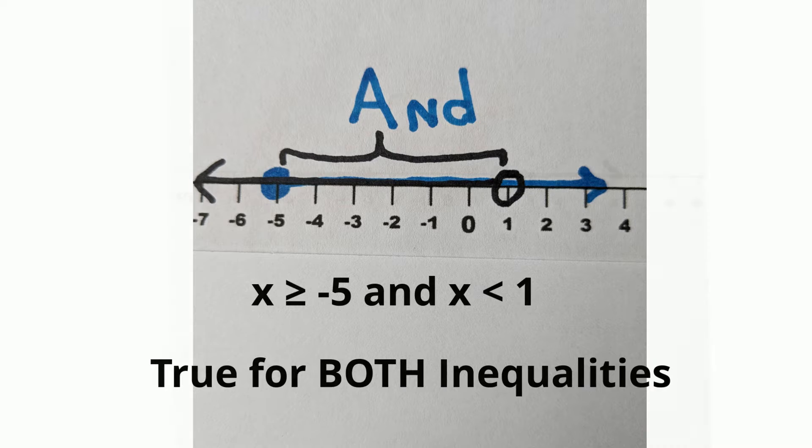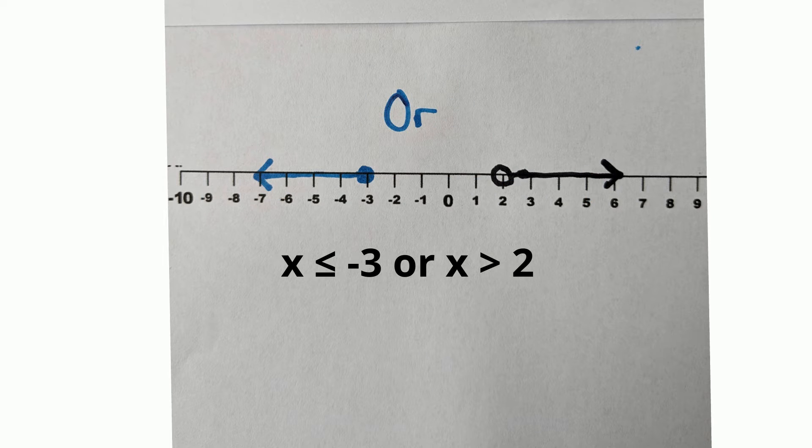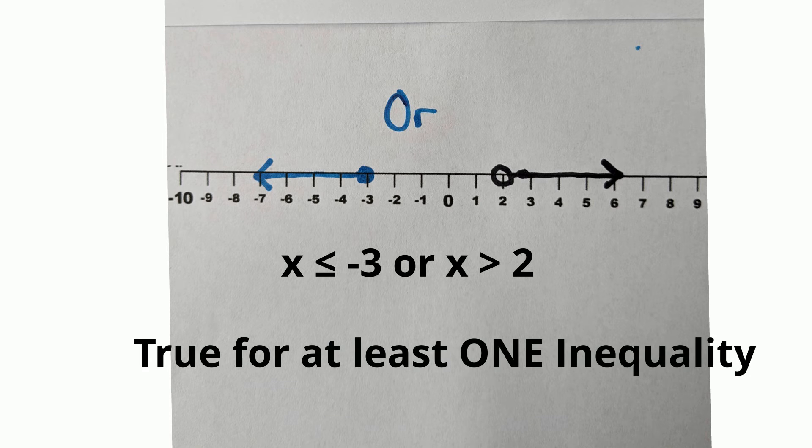The word OR means that you are looking at the union of the inequalities. So the final solution only needs to be true for at least one of the inequalities.